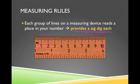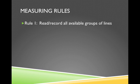Let's actually try and measure an object and talk about the rules for making correct measurements as we do this. Rule number one — this is the easy rule. Your job is to record and read all of the available groups of lines. There's no reason to have a ruler that measures down to the tenths but only bother to measure the ones. You're going to go down to as fine as the ruler or measuring device goes.